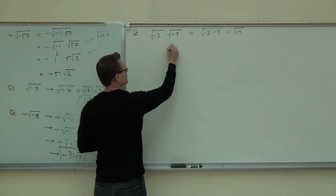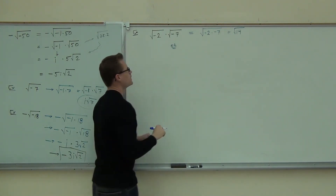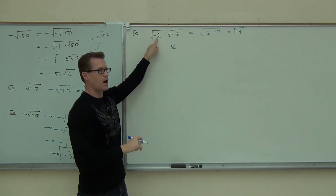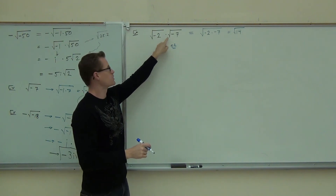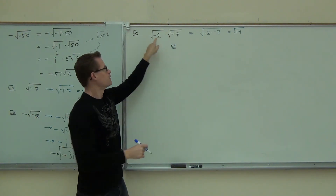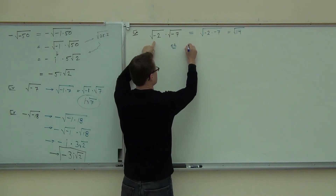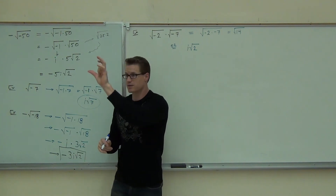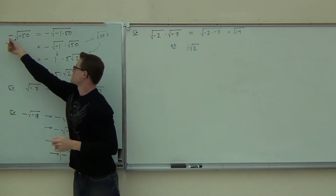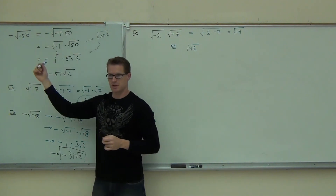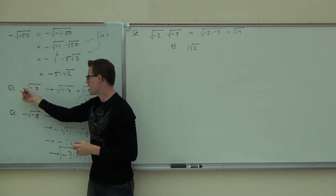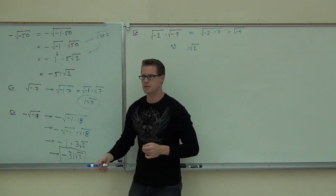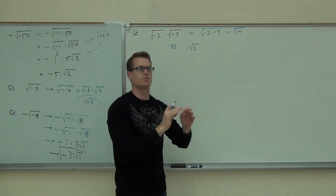Or, could you change those to i-form? Notice how this is going to be i root 2, and this is going to be i root 7. Whenever you see a negative inside that root, all it does is break outside and you have an i. This is going to be i root 7, this is going to be negative i root 18, split up to 18. So whenever you see a negative inside that root, that is simply an i.